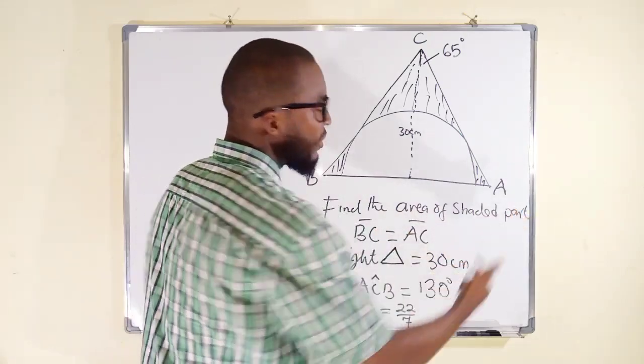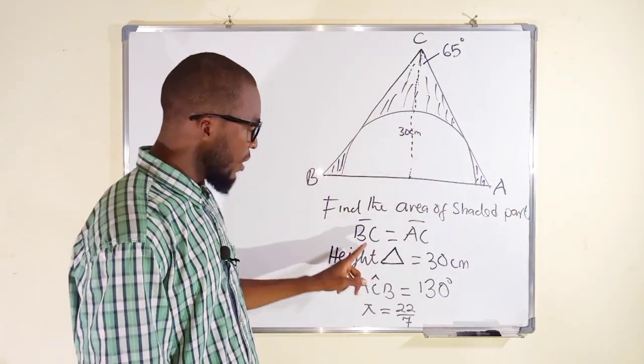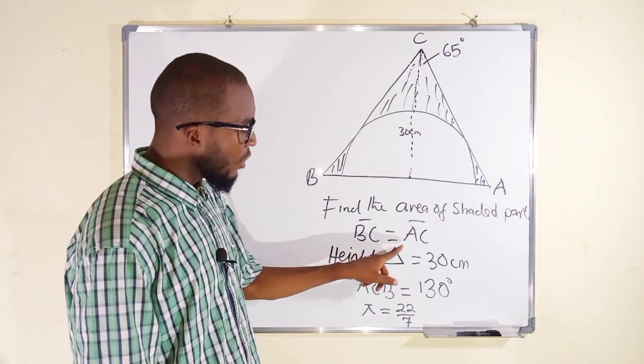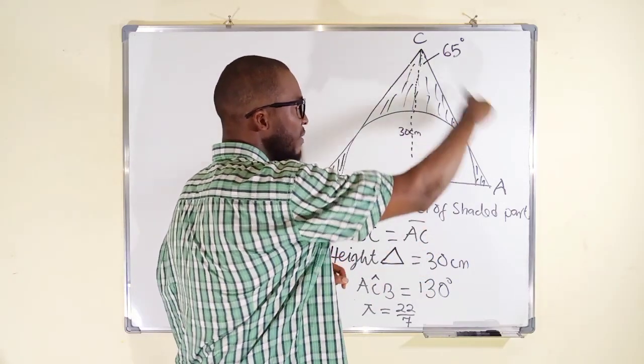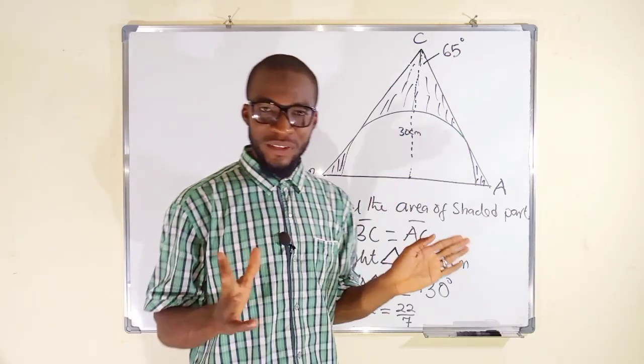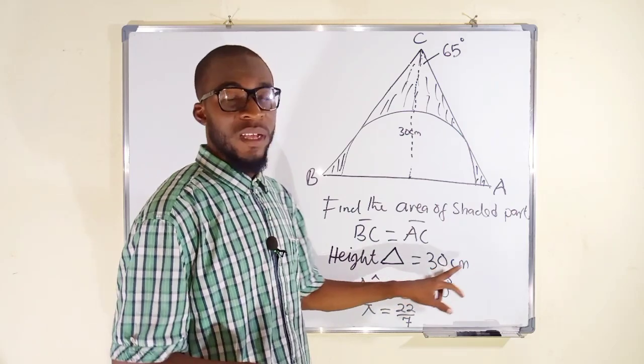We are asked to find the area of the shaded part. You can see the shaded part here. We are given that this triangle has a side length BC equal to the other side length AC. So this side length and this side length are exactly the same. This means that the triangle is an isosceles triangle.